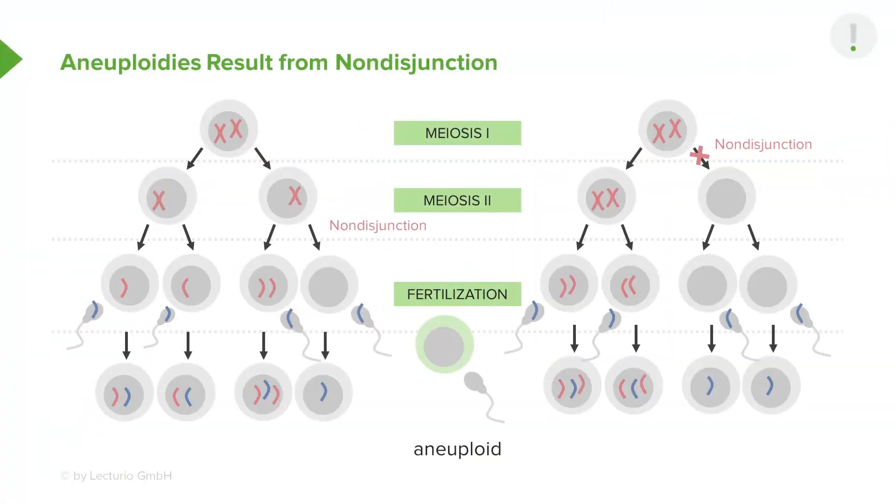Now, it tends to be much more common in the oocyte development. And part of the reasoning for that is suggested that because the oocytes are stalled after meiosis one, as a female baby is born, so very early in development, a female is born with all of her eggs, right?